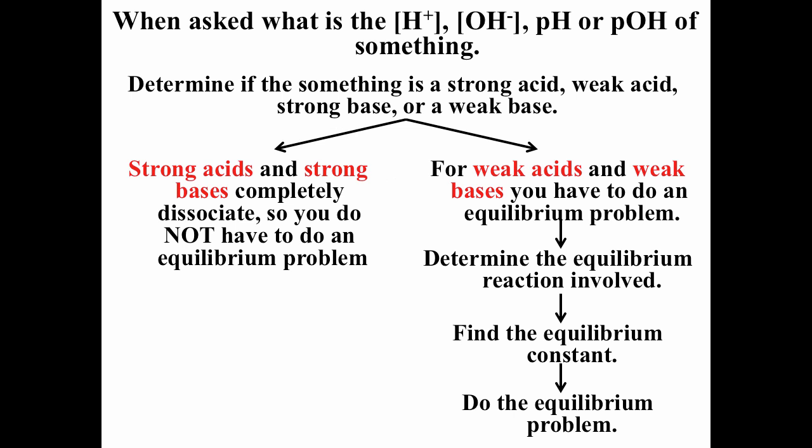Typically, if we're asked about the hydrogen ion concentration, hydroxide ion concentration, pH, or pOH of something, the first question we have to ask is: is it a strong acid or strong base, or is it a weak acid or weak base? If it's a strong acid or strong base, they completely dissociate so we do not need to do equilibrium problems. If it's a weak acid or weak base, we have to determine the equilibrium reaction involved, find the equilibrium constant, and do the equilibrium problem.